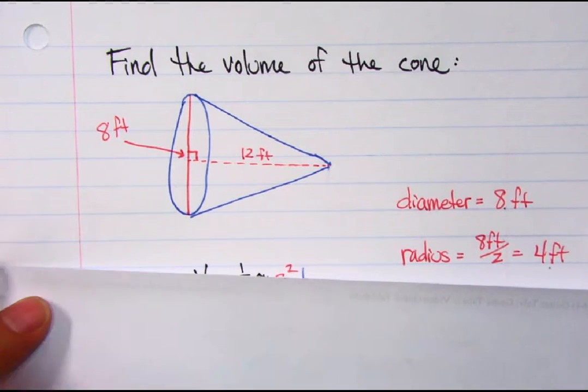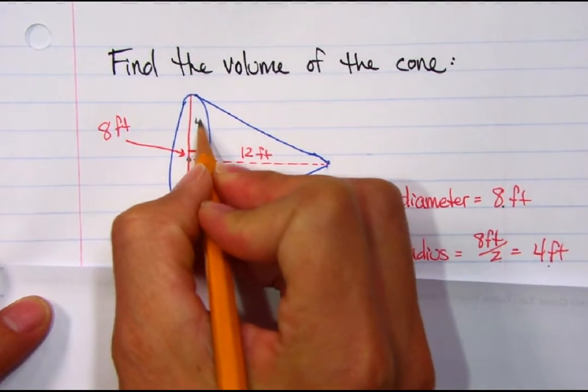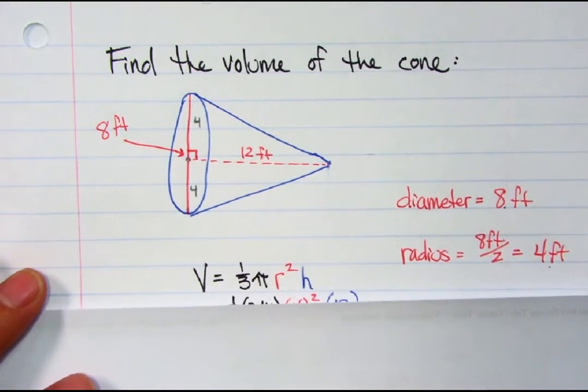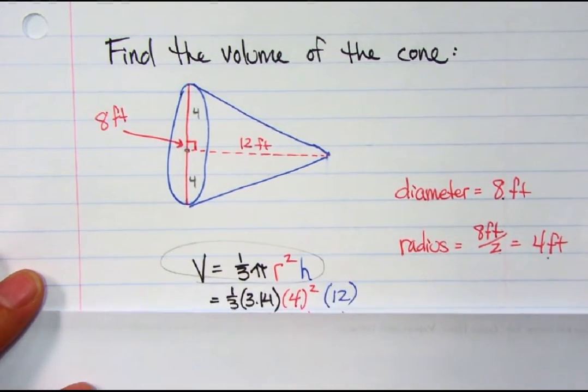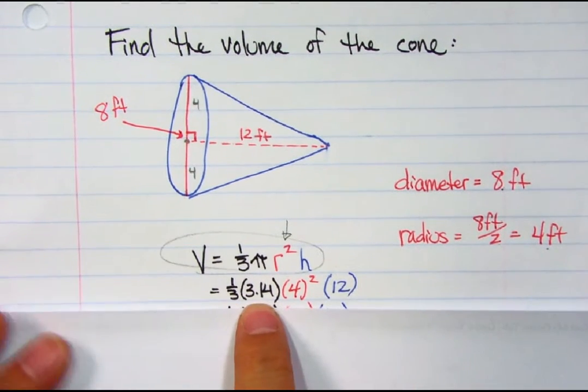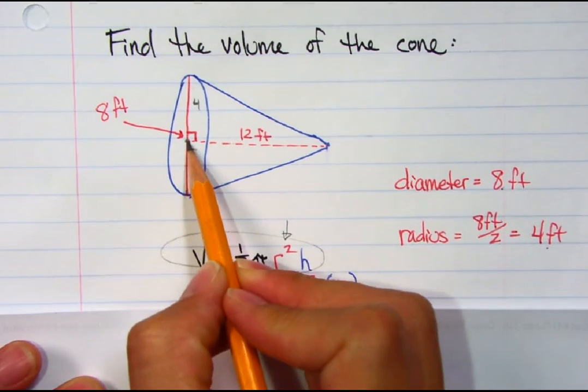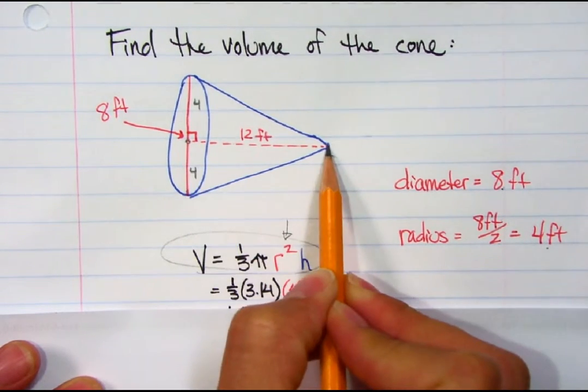From the center to the edge is 4. I could go either direction. That's going to be important because we use it for our formula here. It goes into the radius. So one-third times pi, 4 squared times 12, because 12 is from the center to the top of the cone.